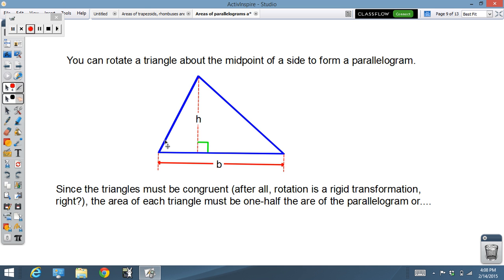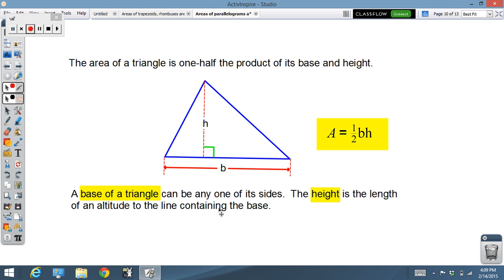Now triangles. Notice how we can take a triangle, and if I take a triangle and I rotate it and then line up the sides, we will see that we create a parallelogram. Therefore, the area of a triangle has to be half the area of the parallelogram, or one half the base times the height. The base of the triangle can be any one of its sides. And the height, again, is a perpendicular line from the vertex to that side. The height is the length of the altitude that contains the base.